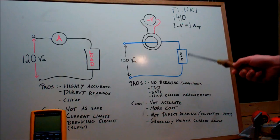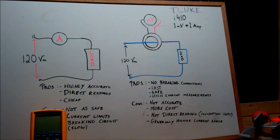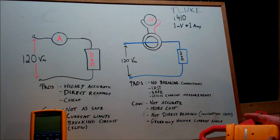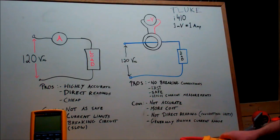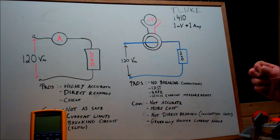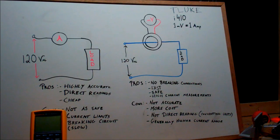So now if you look at the sketch for the clamp meter, you can tell that you don't have to break the circuit. And that's a huge advantage. First off, speed. You just go like that and you're done. Next is the fact of safety. I can't stress that enough. Safety is huge in this field.